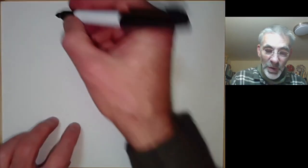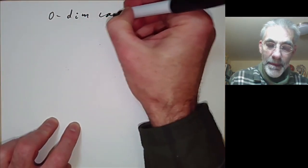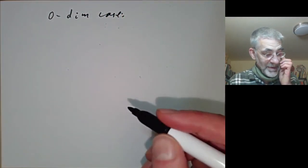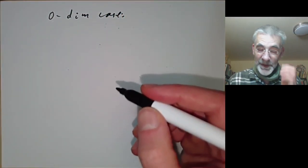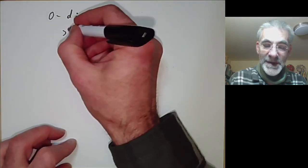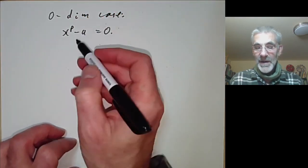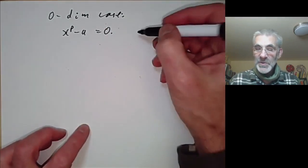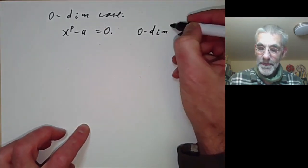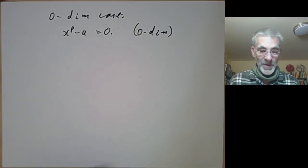To see what's going on it's easier to simplify and look at the zero-dimensional case. So instead of looking at the variety x^p + y^p = a, let's just look at the variety x^p − a = 0. This is zero-dimensional, so making everything zero-dimensional makes it a lot easier.